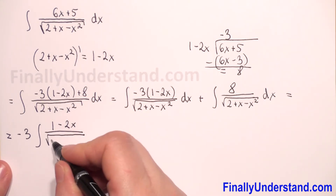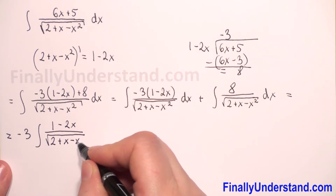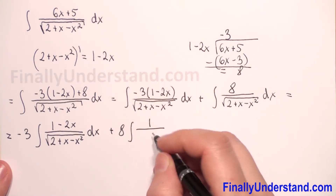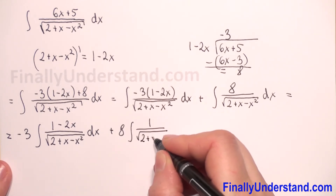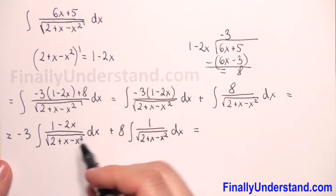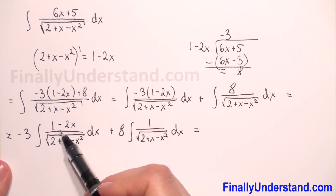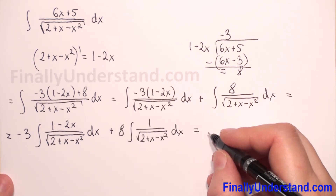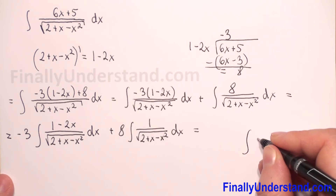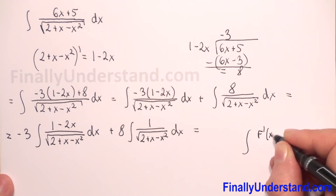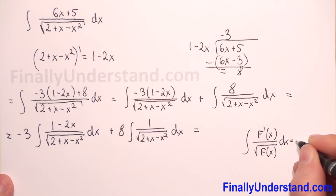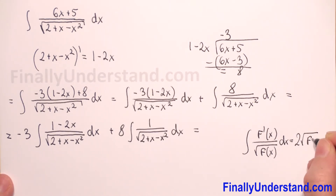The first integral is negative 3 times (1 minus 2x) over the square root of 2 plus x minus x squared, and the second is 8 over the square root of 2 plus x minus x squared, with respect to x. In the first integral the numerator is the derivative of the expression under the square root. We can use the formula: the integral of f′(x) over the square root of f(x) equals 2 times the square root of f(x) plus constant C.